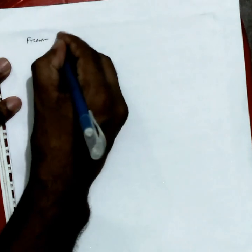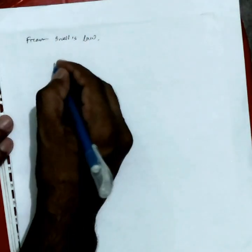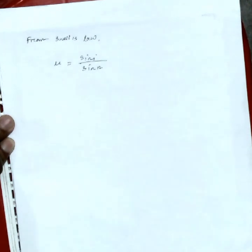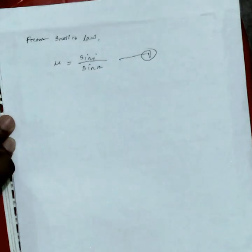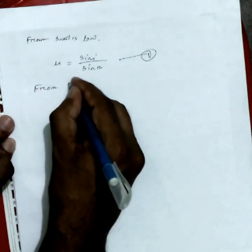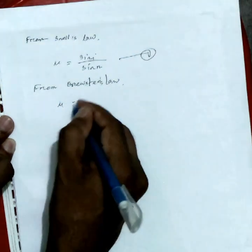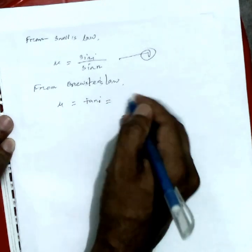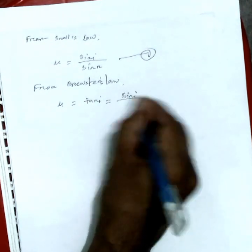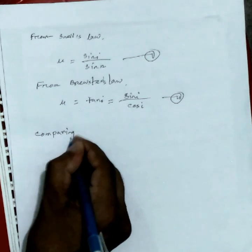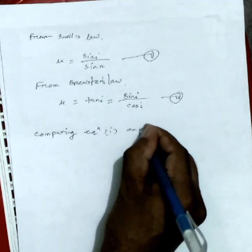From Snell's law we have the laws of refraction — this is equation number 1. From Brewster's law we have μ equal to tan(i) — this is equation number 2. Comparing equation 1 and equation 2 we get the derivation of Brewster's law.